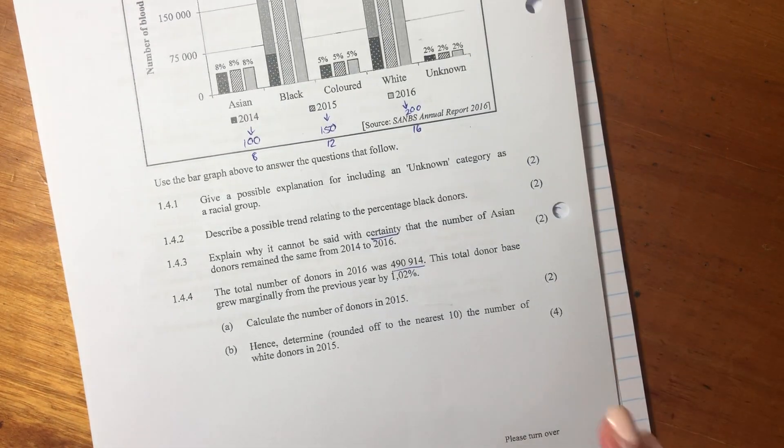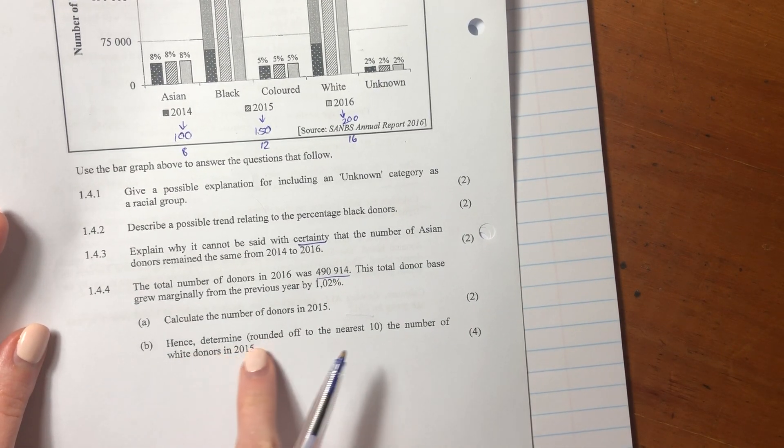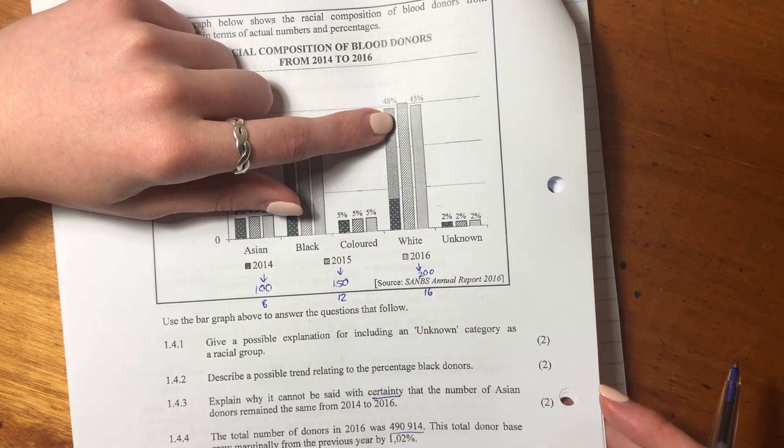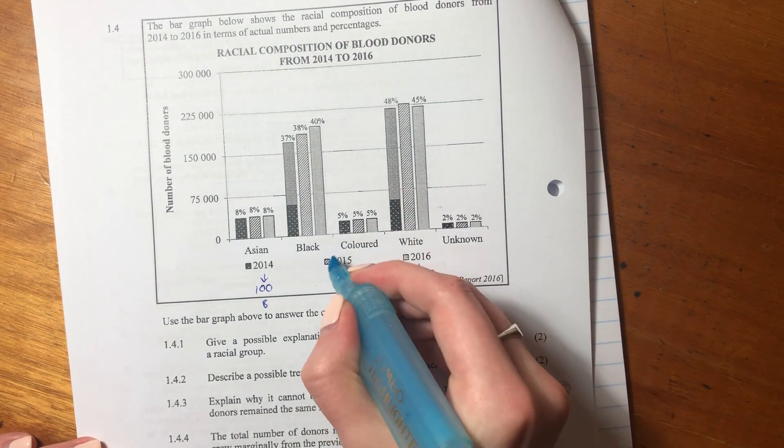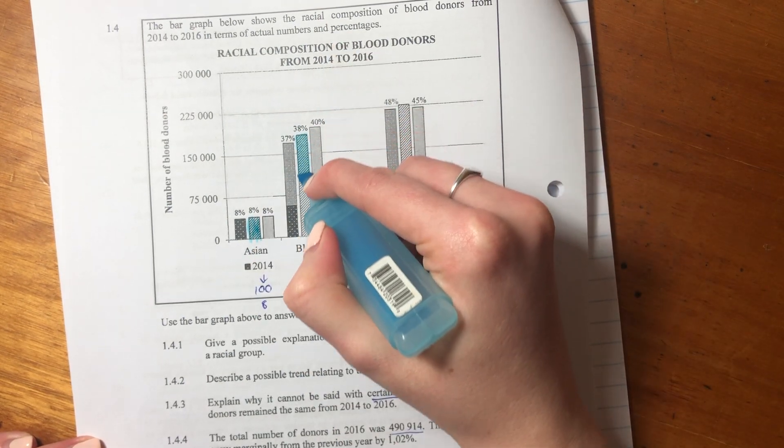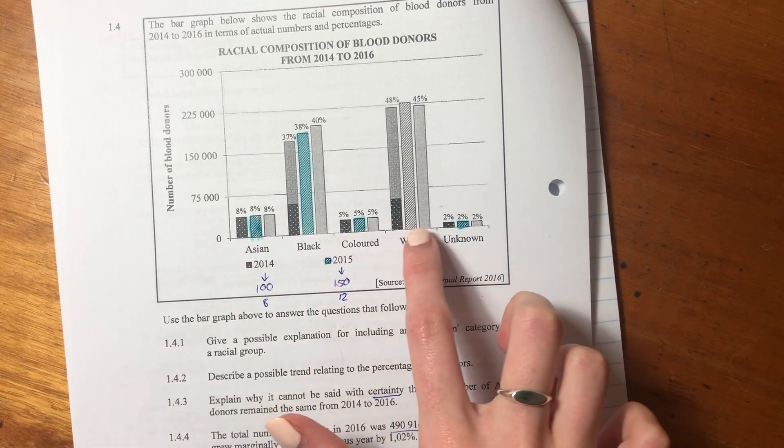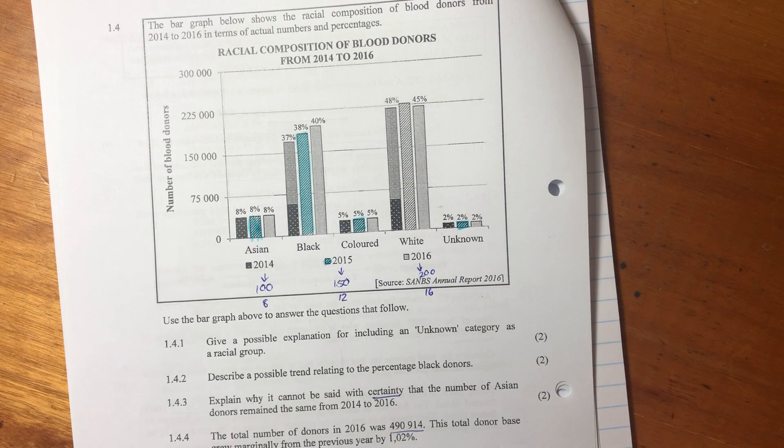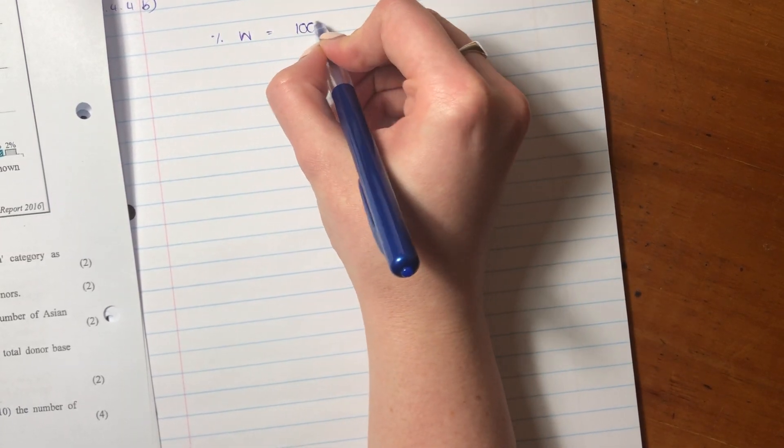It says hence determine, round it off to the nearest 10, the number of white donors in 2015. So we know that the donors in 2015 we've just worked out is 485,957. So now we want to work out, round it off to the nearest 10, the white donors. But do you see here in 2015 we don't actually have the percentage for white donors. But we do have the percentage in 2015 for everything else. We have Asians, we have black people, we have colored people. We don't have the white people yet, but we have the unknowns. And we know that all of these 2015 amounts, we're going to add them together, should equal 100, because we must count for everyone that donated blood.